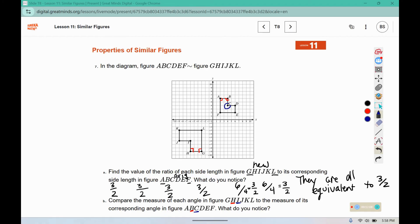C is 270, because it's 90, 90, 90. I is 270 as well. J corresponds with D. J is 90, D is 90. K corresponds with E. K is 90, E is 90. L corresponds with F. L is 90, F is 90. So what do you notice? The corresponding angles are all equal in measure.